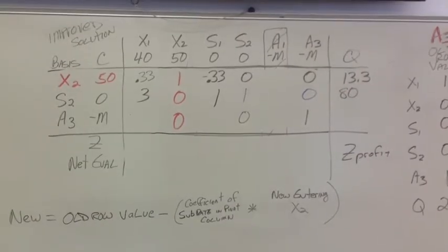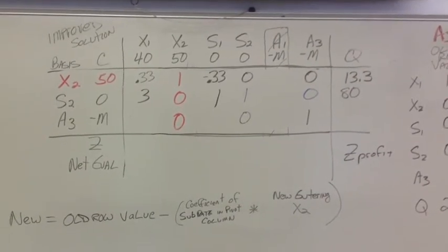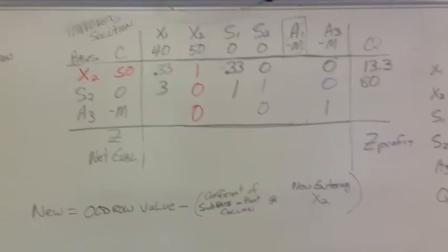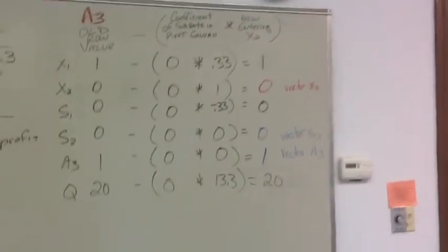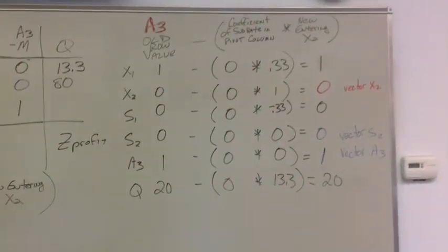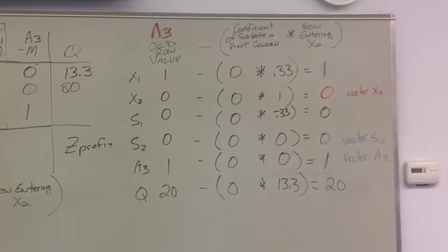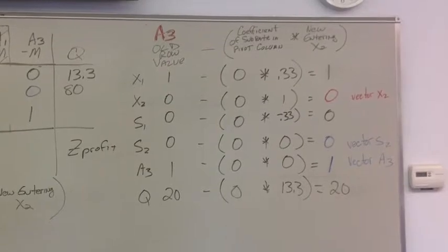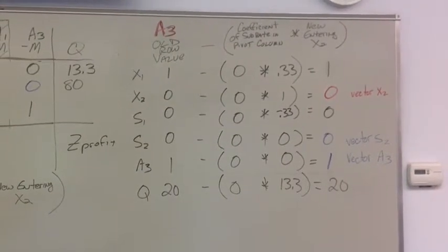Okay, we've gone and put s2 into our improved solution. Now we do the same thing for our a3 variable. We calculate the new row values. Over here, you notice I've filled it out. Again, I do it vertically. If you like doing it horizontally, have at it. But it's easier for me to do math this way. The book does it horizontally.